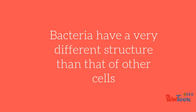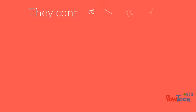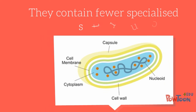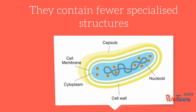Bacteria, on the other hand, have a completely different structure to all other cells. They are more simplistic, meaning they have fewer specialised organelles. Two big differences to remember are that bacteria do not have mitochondria or a nucleus.